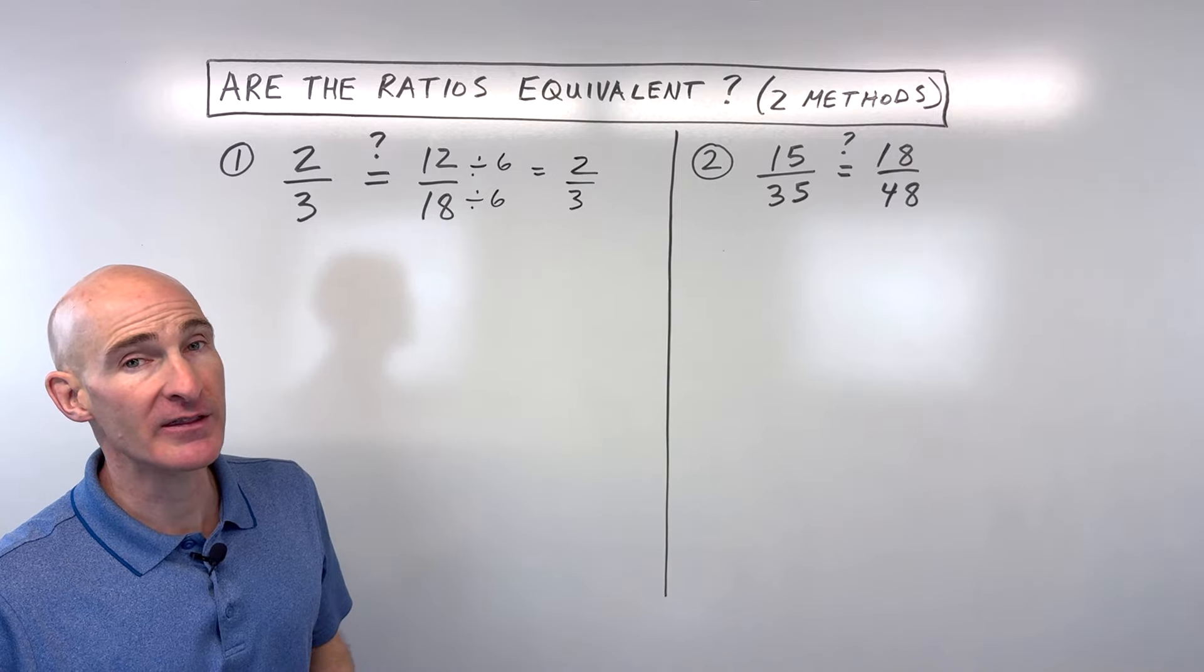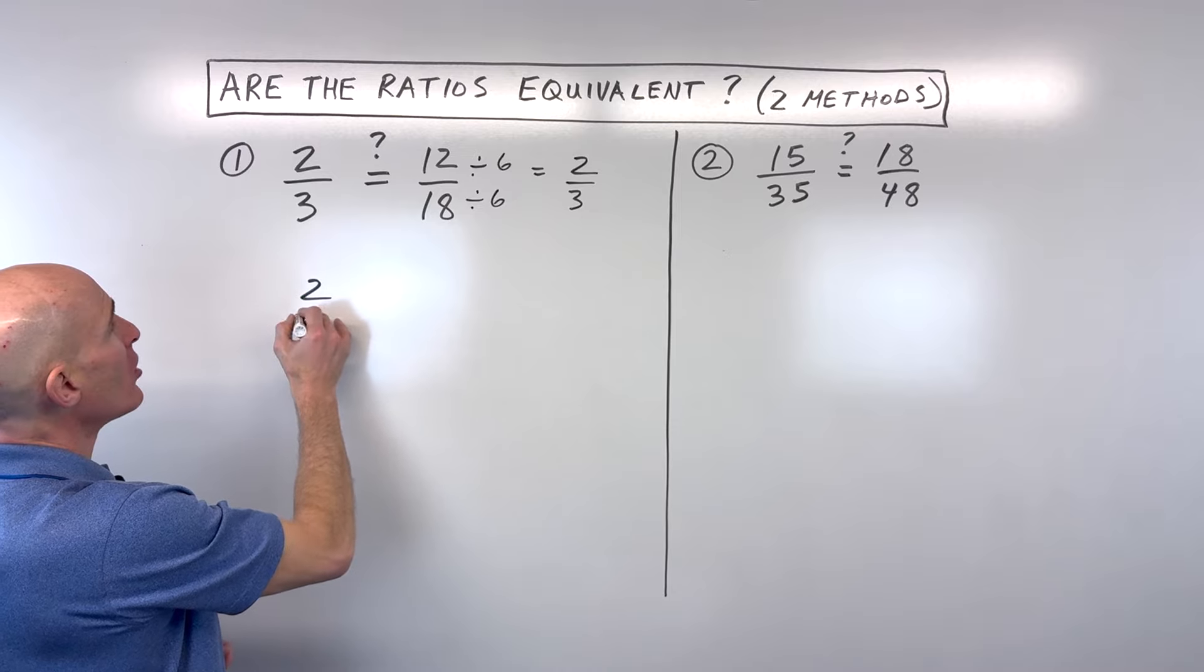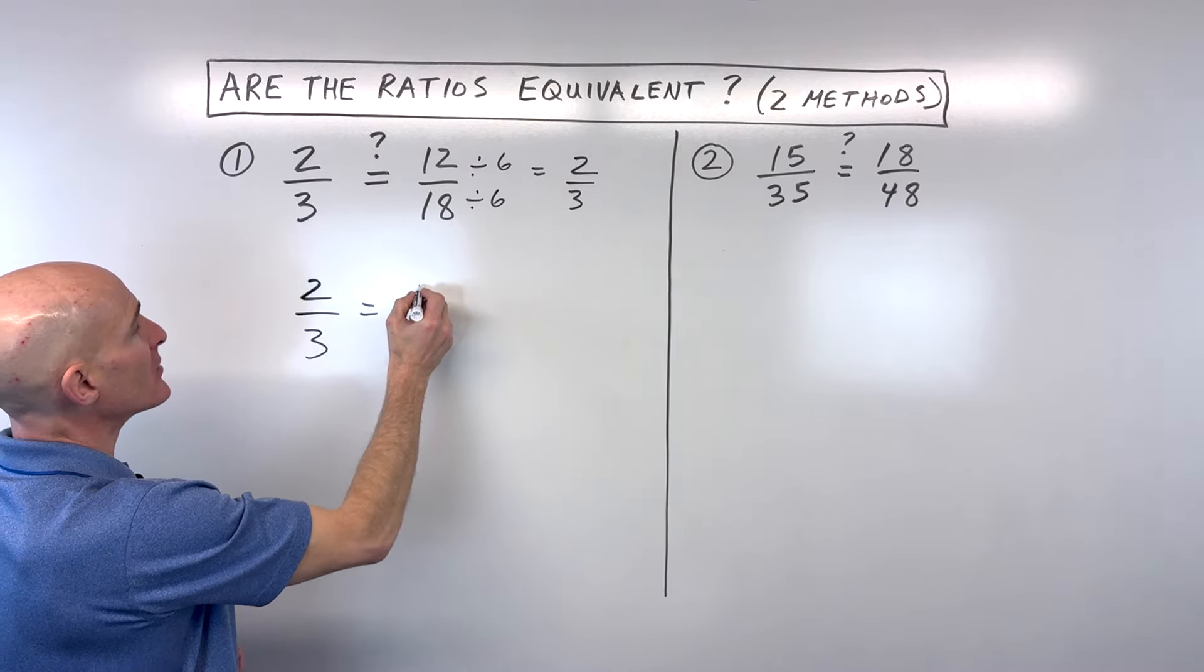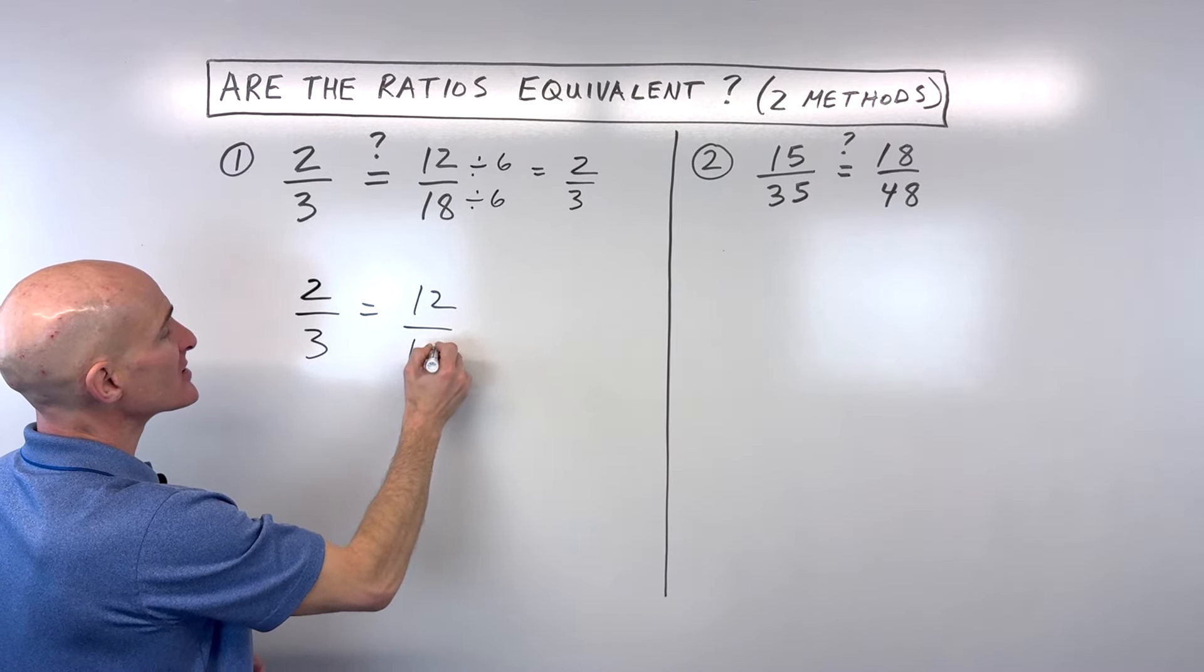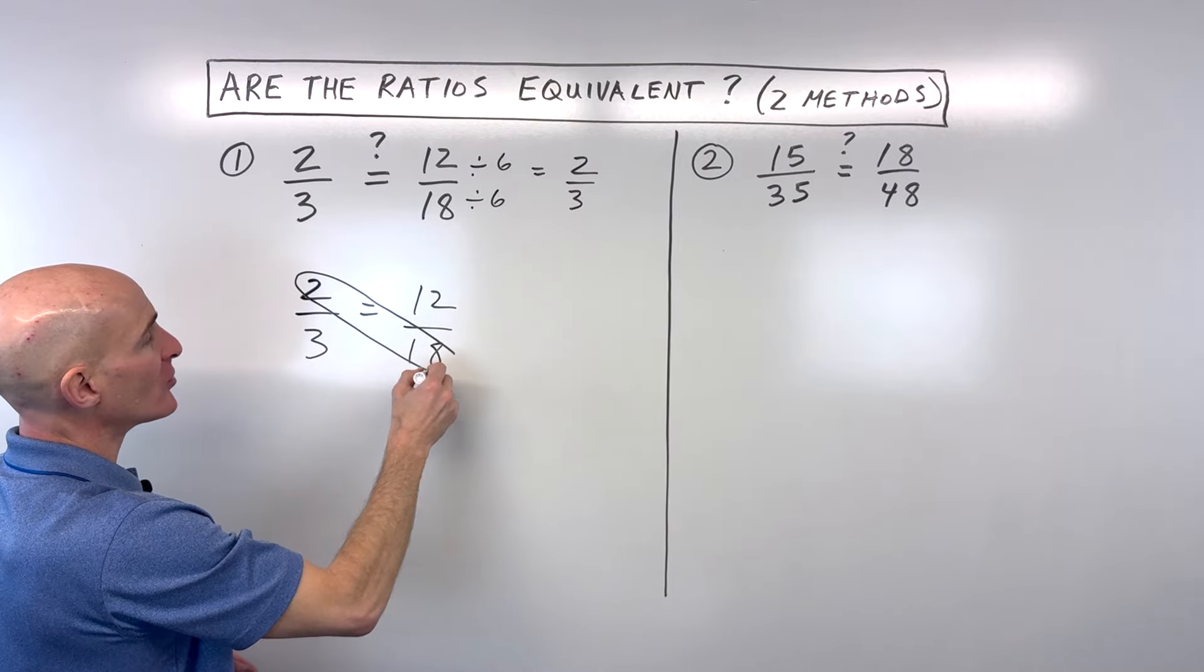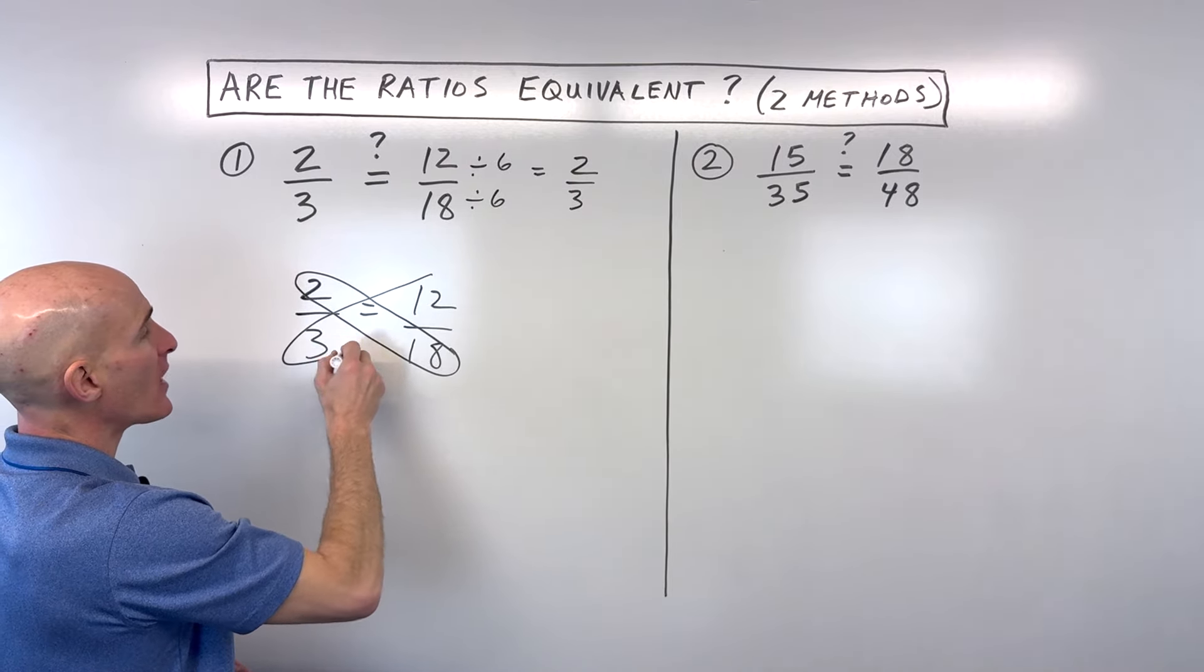Now that's one method. The other method that you can do is what's called the cross product, okay? And the cross product is just like it sounds, you're going like across on the diagonal here, and you're multiplying these quantities together.